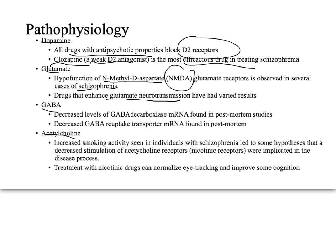GABA is one of the main inhibitors in the brain. Post-mortem studies have shown a decreased level of GABA decarboxylase mRNA. Since mRNA produces the protein, there is presumably less GABA decarboxylase enzyme, which would lead to too much GABA activity — inhibiting pathways that need to be firing.